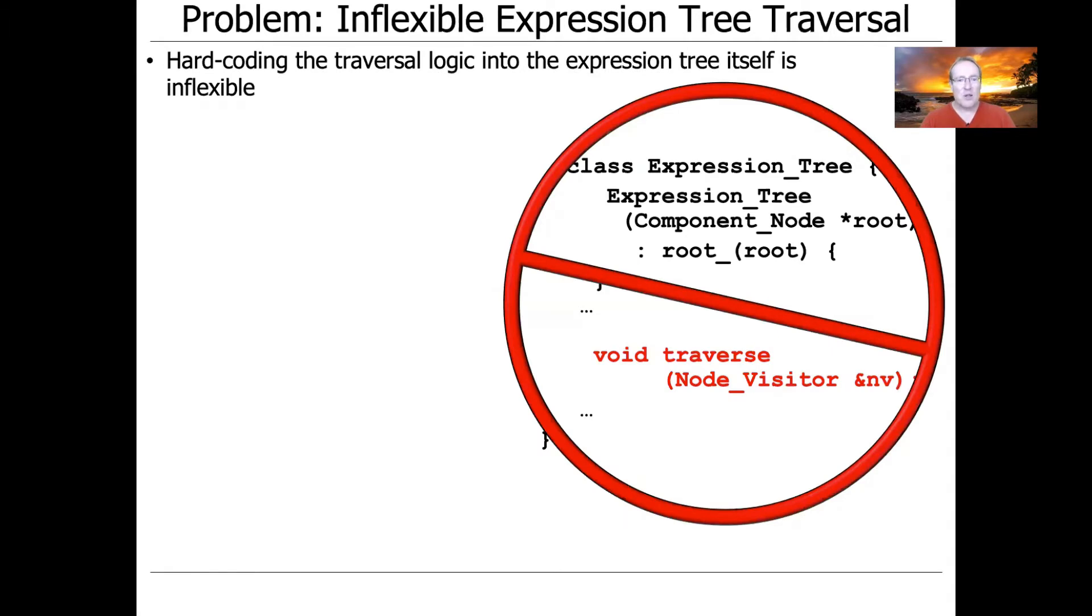There's a number of different ways to do this. One way would be to hard code the traversal logic into the expression tree itself. So we could have a method in the tree called traverse, and we pass in some kind of reference or an object or a pointer called visitor or node visitor. And that would go ahead and traverse every element in the tree and do something to it.